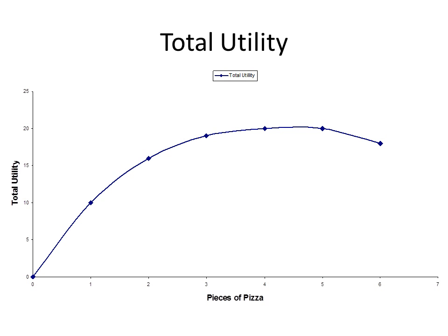If we were to do a graph of total utility, this is what it would look like. At one piece of pizza, we derive 10 utils. At two pieces, we derive 15. At three, we derive 18. At four, we derive 20. At five, we derive 20. And at six, we go back down to 18.